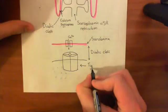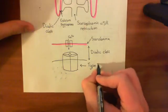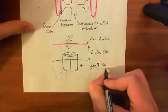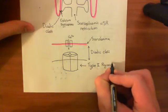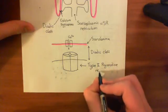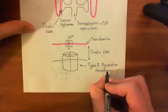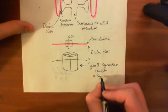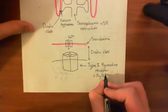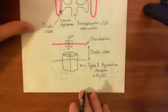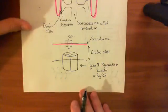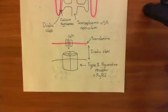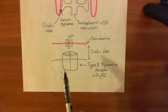This is type 2 — we'll write it in Roman numerals because it's so important — ryanodine receptor. The type 2 ryanodine receptor is often abbreviated to RYR2: RY for ryanodine, R for receptor, and 2 for the second type. There are three genes in the human genome which code for ryanodine receptors: the type 1 gene, the type 2 gene, and the type 3 gene.